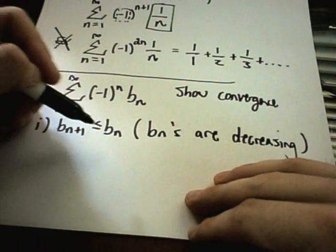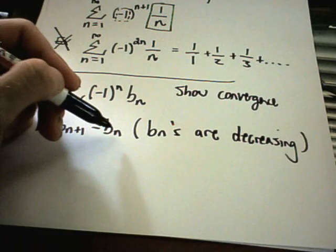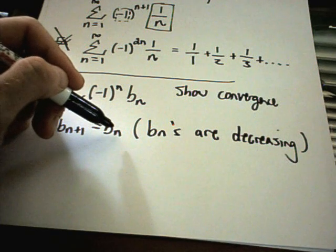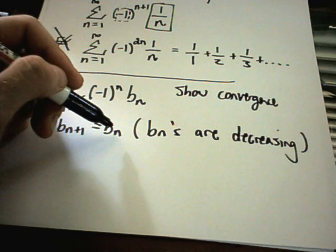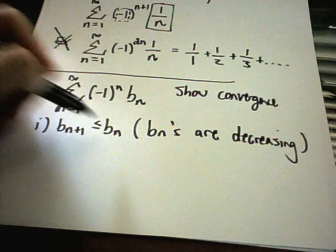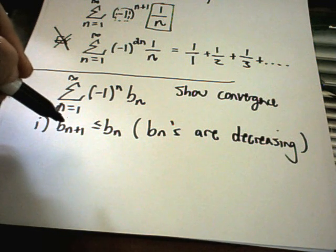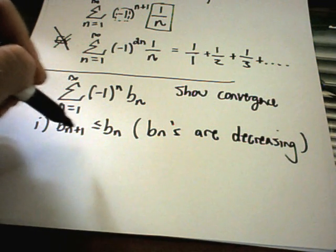And a lot of books will say that this has to hold for all values of n. That's not exactly true at all. As long as it eventually decreases. So maybe I have 1, 2, 3, 4, 5, 6, 7, 8, 9. Okay, well clearly the terms are not decreasing.